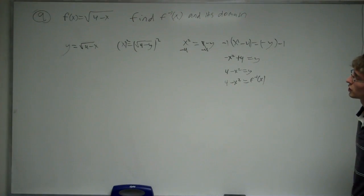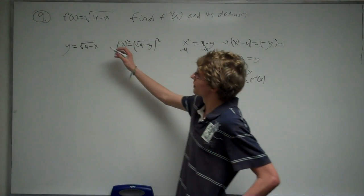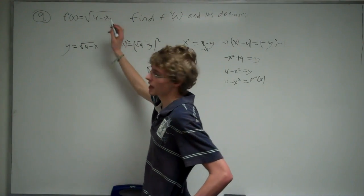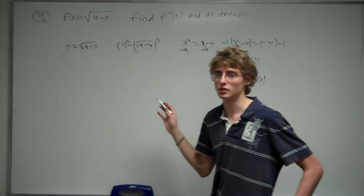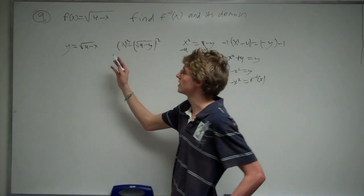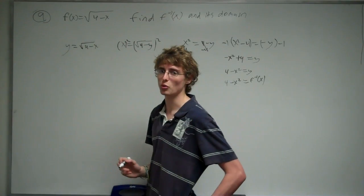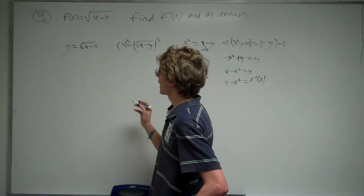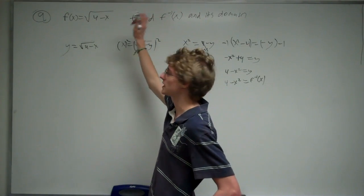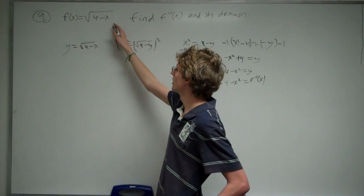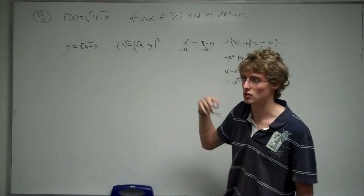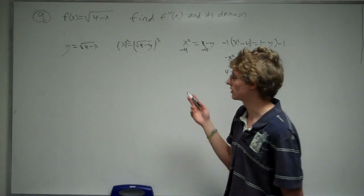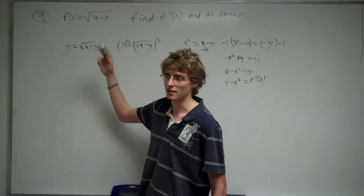Now the range of the original function, this radical, this function can never be a negative number. The lowest this function can be is 0, and that's when x equals 4. And it can extend off to infinity, like if you had negative 100 for x, you would have a really large number there, and it just goes off to infinity.